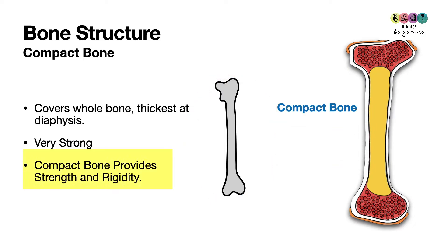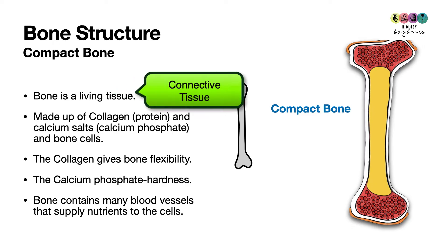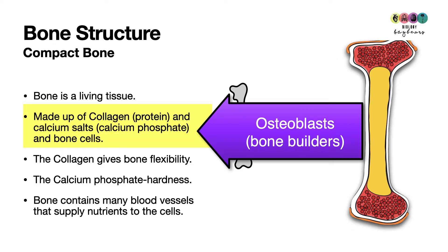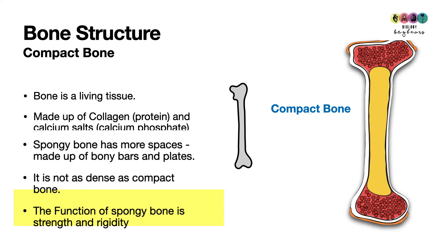Compact bone is very strong and its function is to provide strength and rigidity — that's asked very often in exams. Bone is a living connective tissue made up of collagen, which is a protein, calcium salts such as calcium phosphate, and bone cells. The osteoblasts are the cells that build bone. The collagen gives flexibility, whereas the calcium phosphate provides hardness. The bone also contains many blood vessels to supply nutrients to the bone cells.